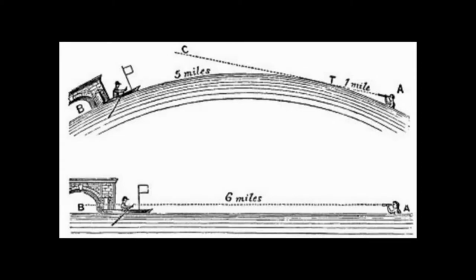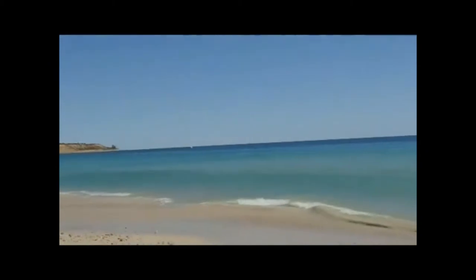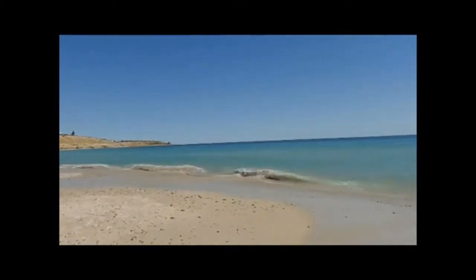But if the earth is a globe, the surface of the six miles length of water would have been six feet higher in the center than at the two extremities. From this experiment it follows that the surface of standing water is not convex, and therefore that the earth is not a globe. On the contrary, this simple experiment is all sufficient to prove that the surface of the water is parallel to the line of sight, and is therefore horizontal, and that the earth cannot be other than a plane.